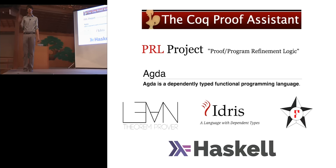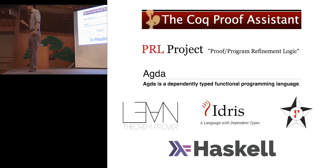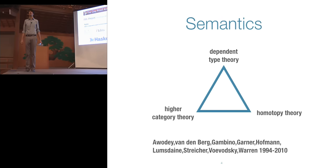The idea with dependent types generally is that you have types that can depend on programs or refer to programs. We've seen many talks this week about how you can use this for program verification, checking invariants of programs, and mechanized mathematics.